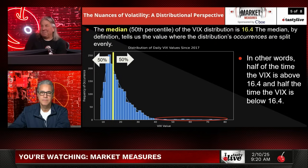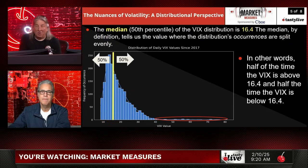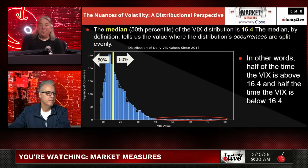That's a really good picture. The median — the 50th percentile of the VIX — is 16.4. That makes more sense. The median by definition tells us the value where the distribution's occurrences are split equally, so half the time the VIX is above 16.4 and half the time it's below 16.4. This is the distributional perspective of volatility — it is very nuanced.